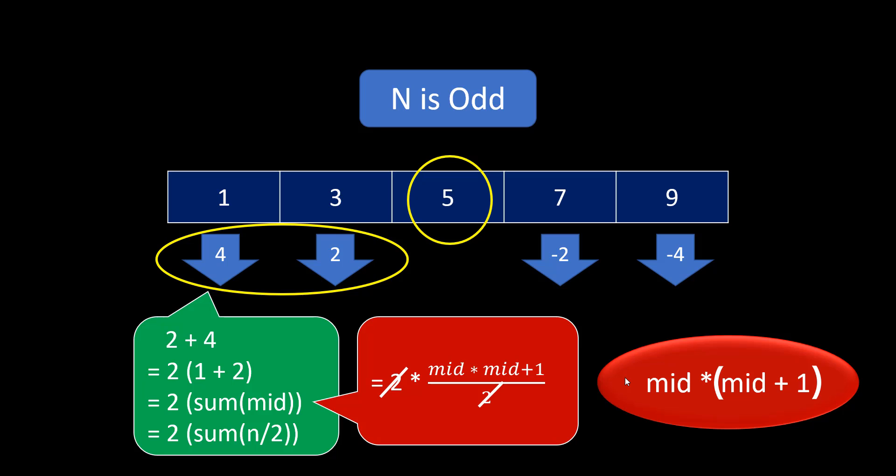So, if my n is odd, I can simply say that I will require mid into mid plus 1 steps.